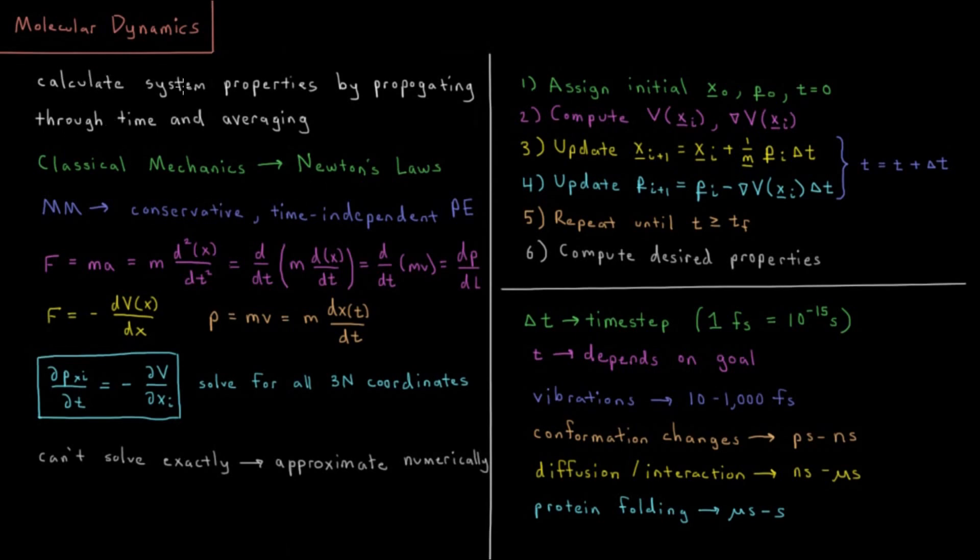So as I mentioned, we're going to calculate various system properties by propagating our system through time and averaging the values over time. So in classical mechanics we obey what's called Newton's laws, things like force equals mass times acceleration, Newton's three laws, those sorts of things.